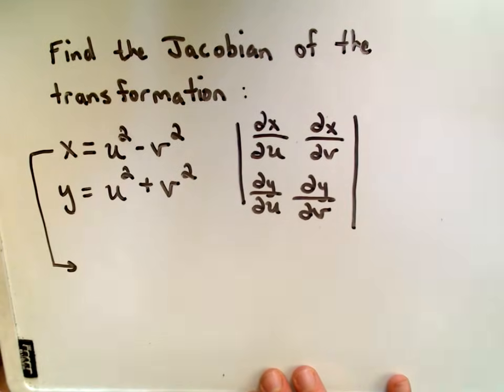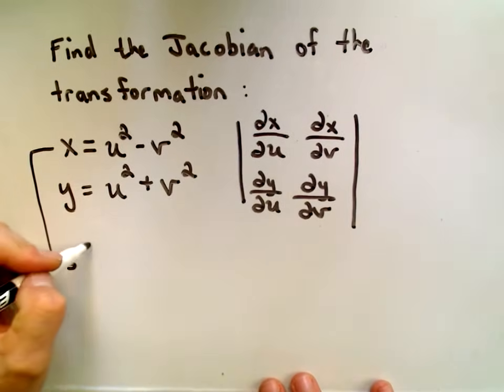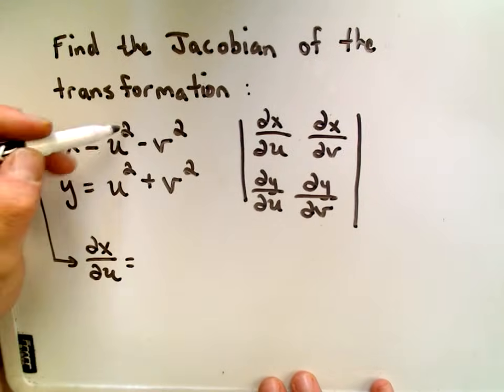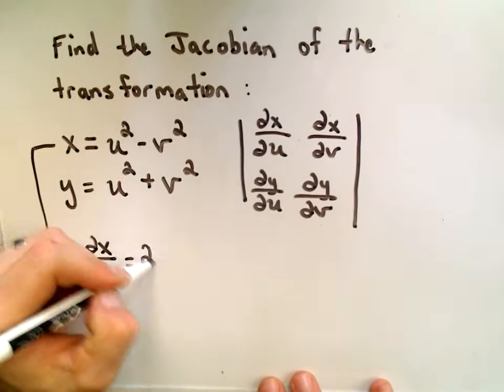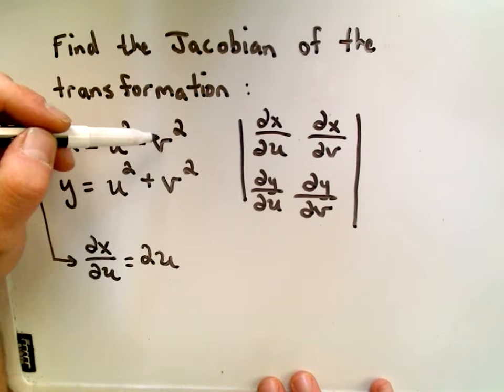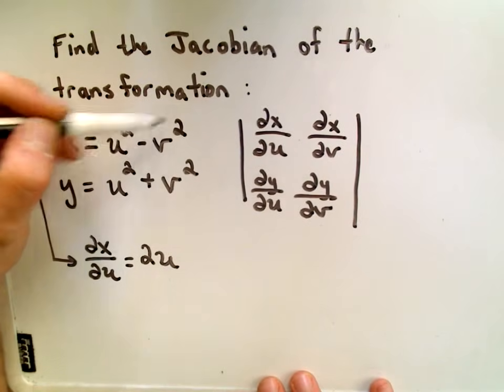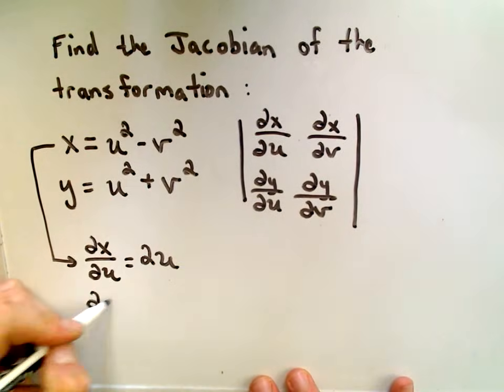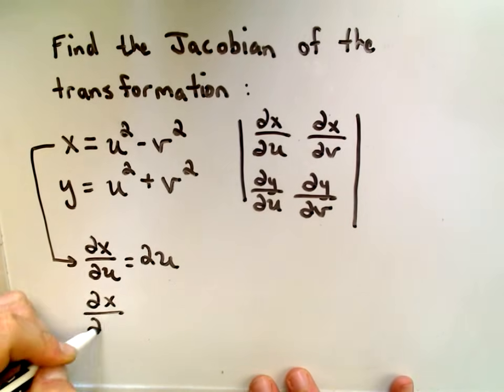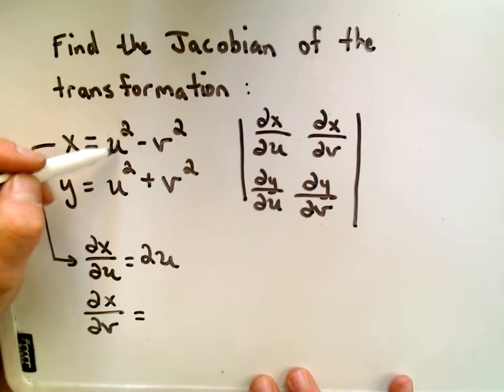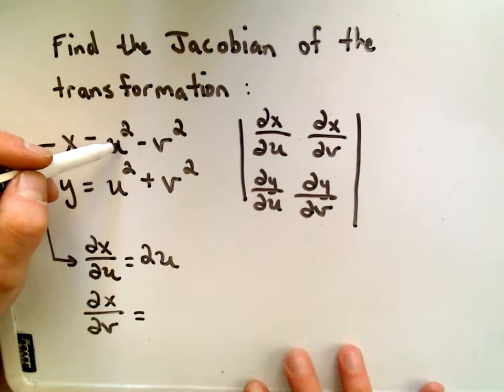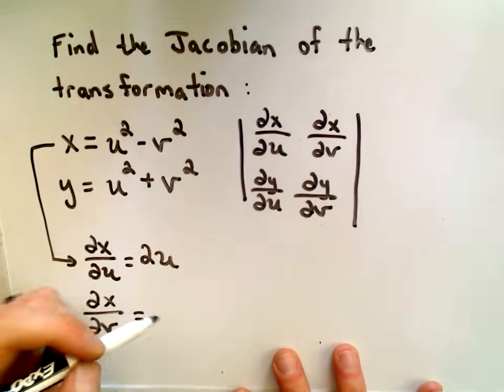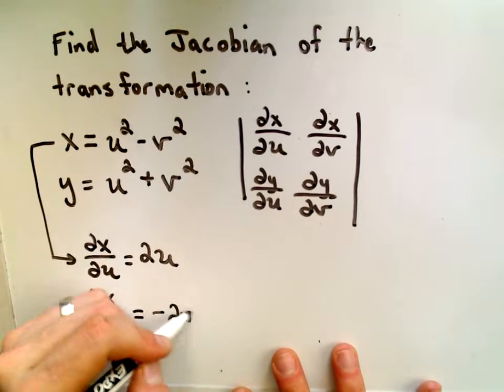If x here is my function, u-squared minus v-squared, well, if I take the partial derivative with respect to u, so now I'm treating u like my variable, I'll simply get 2u. I'm treating v like a constant, so the derivative of that will simply be zero. When I take the partial derivative of x with respect to v, u-squared is a constant, so that'll go away. We're treating the v like a variable, so we'll simply get minus 2v.